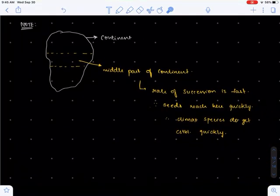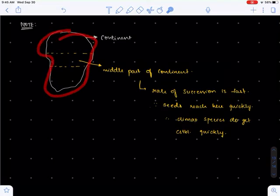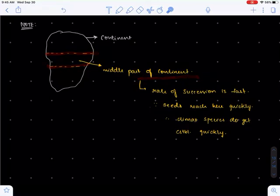If we take a continent, the middle part has a higher rate of succession. Let's understand why the middle part undergoes succession at a faster rate. It's because many seeds reach this part of the continent. Imagine a bird traveling from one part of the continent to another.